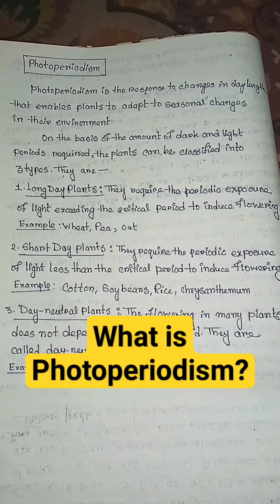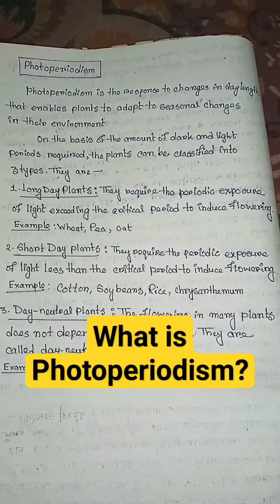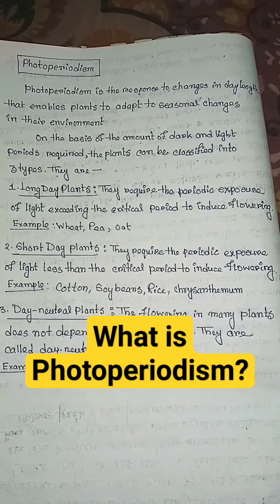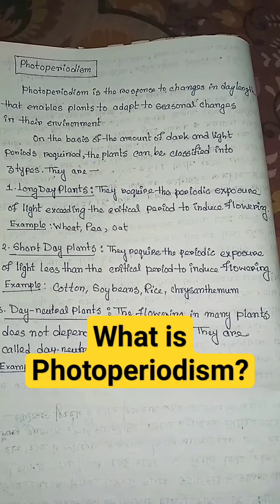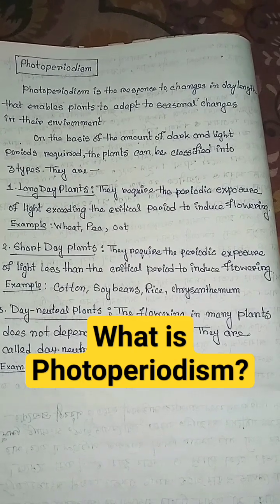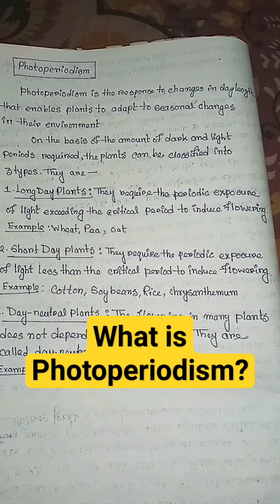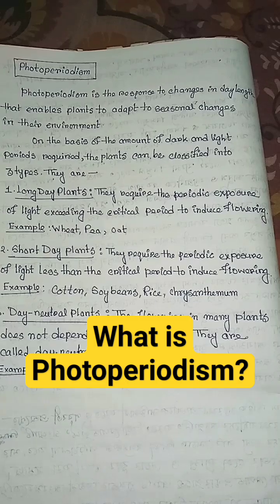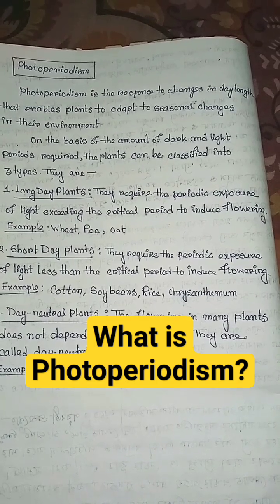What is photoperiodism? Photoperiodism is the response to changes in day length that enables plants to adapt to seasonal changes in their environment. On the basis of the amount of dark and light periods required, plants can be classified into three types.